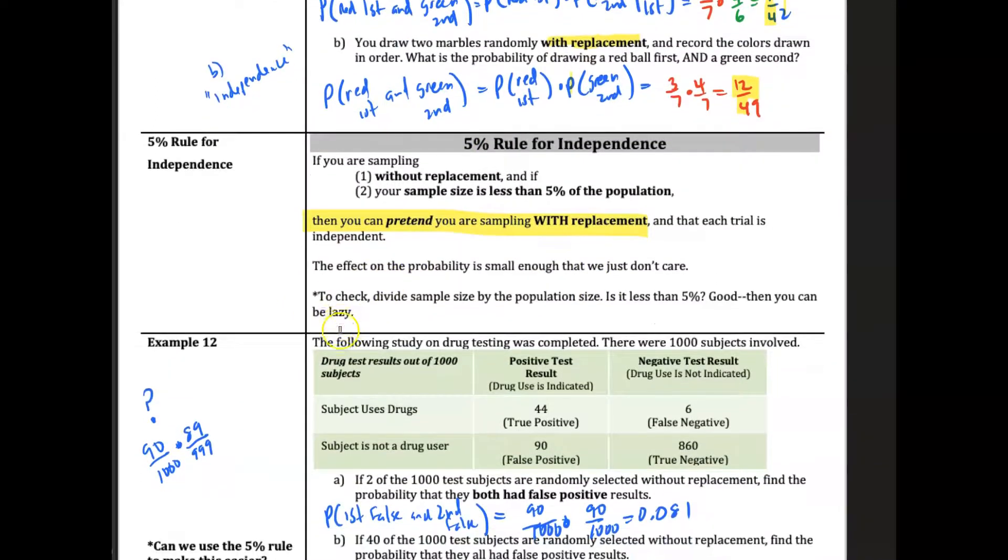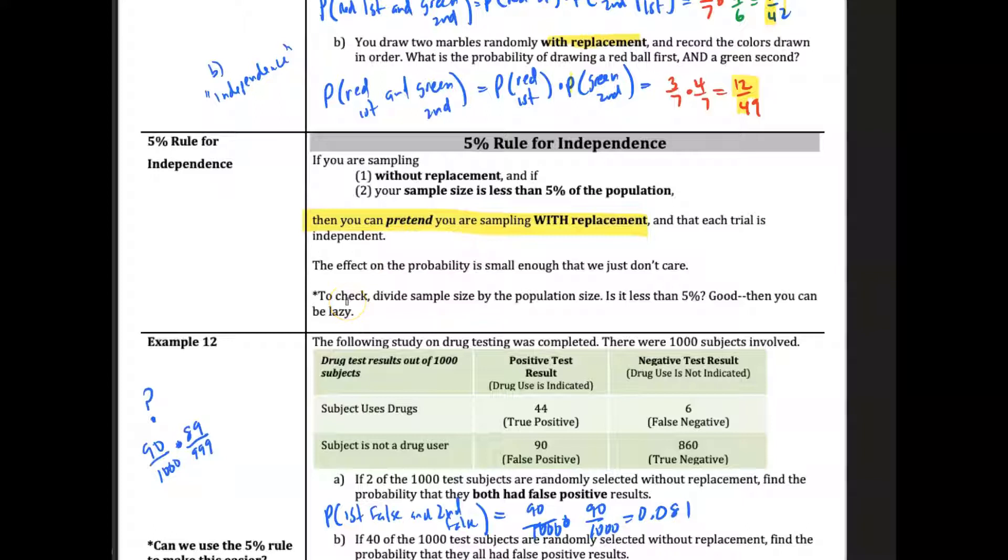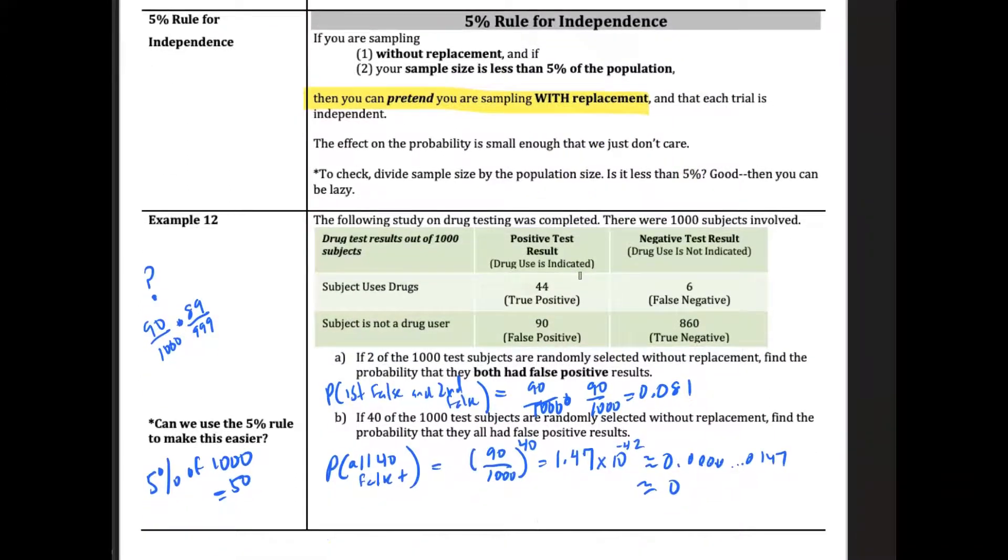And we have a quick check. You can check to see if sample size is less than 5%. Just divide the sample size by the population size. If it's less than 5%, then we can assume independence and just multiply these probabilities.